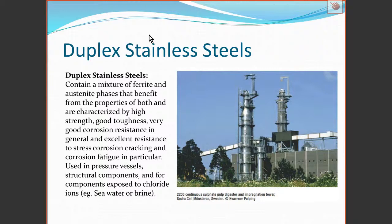One more type is duplex stainless steels, which contain a mixture of ferrite and austenite phases. These have excellent corrosion resistance and are used for things like high-pressure piping and chemical processing environments with reagents at temperature. That was an introduction to stainless steels, rounding off this module. I hope I've been able to increase your appreciation of the amazing material that steel is.